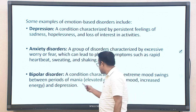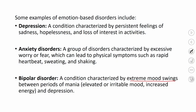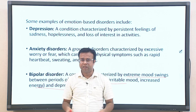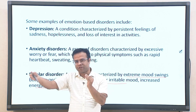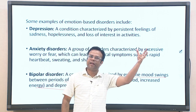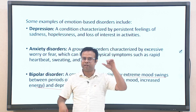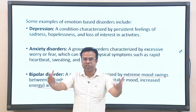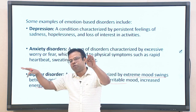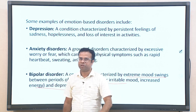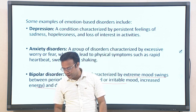Bipolar disorder is characterized by extreme mood swings between periods of mania and depression — a cycling between depression and mania. Mania involves highly elevated energy, too much joy, irritability, and excessive activity beyond normal proportion. The person can suddenly become extremely active and agitated, then shift back into a depressed mood showing all the symptoms of depression.